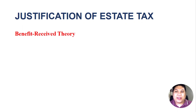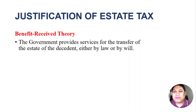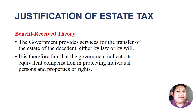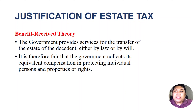The other theory is the benefit received theory. Under this theory, the government provides services for the transfer of the estate of the deceased, either by law or by will. It is therefore fair that the government collects its equivalent compensation in protecting individual persons and their properties or rights. Under the benefit received theory, the government protects the settlement of the estate and the estate itself, so it is right for the government to collect something as compensation for that protection.